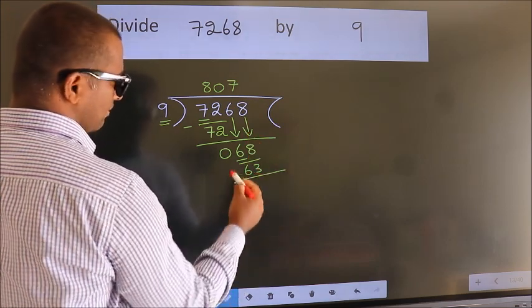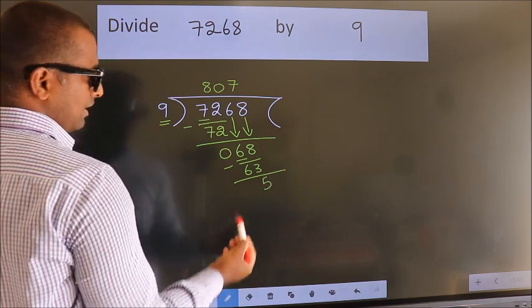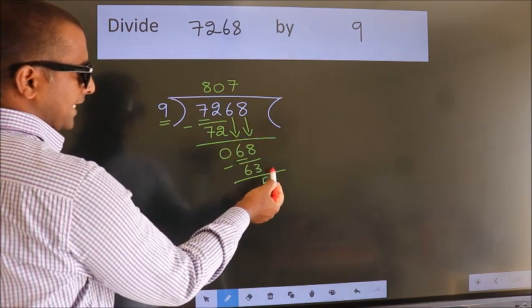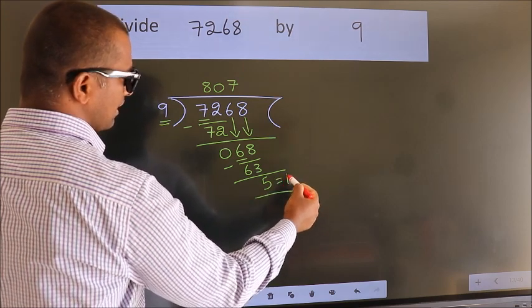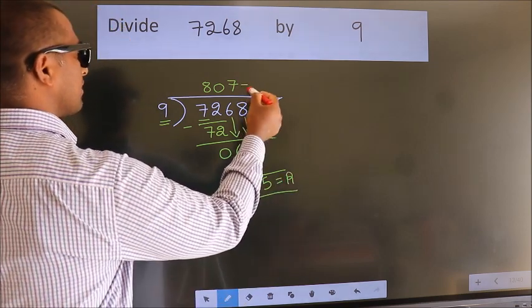Now we subtract and get 5. No more numbers to bring down, so we stop here. This is our remainder. This is our quotient.